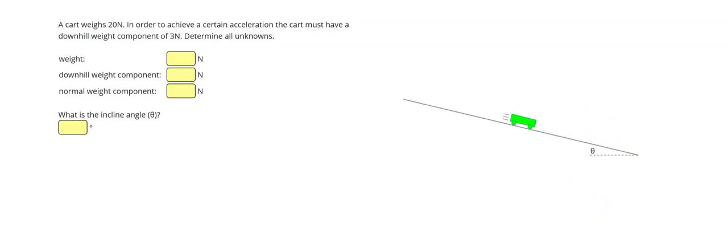In this one it says a cart weighs 20 newtons. In order to achieve a certain acceleration, the cart must have a downhill weight component of three newtons. Alright, so let's draw that weight straight down. Draw our downhill weight component following the hill, and our normal weight component perpendicular to that one we just drew. Hoping we get a pretty good rectangle. And my downhill weight component was a little long, so let me shorten that. And then erase these extra lines. So a decent rectangle.